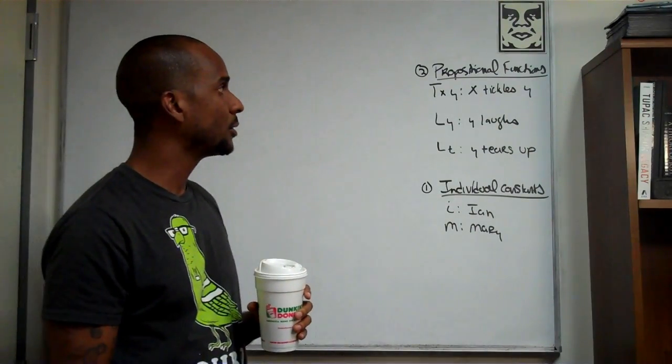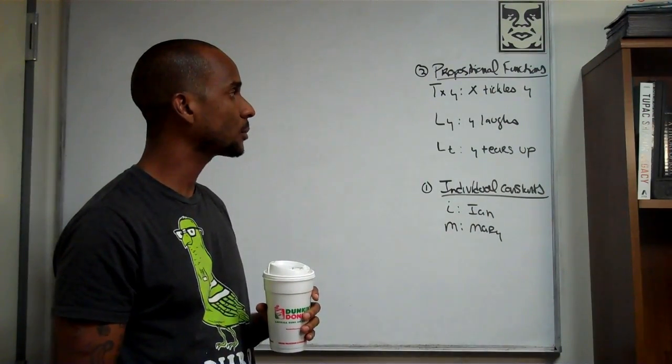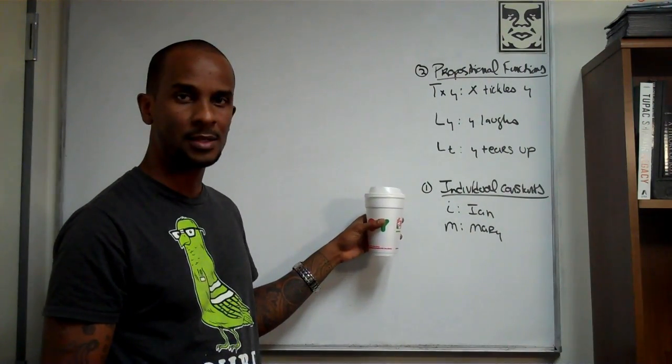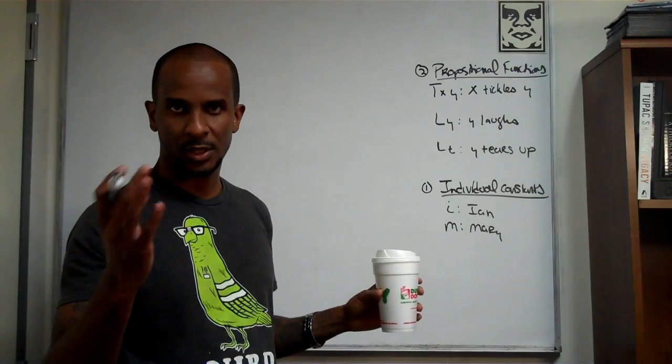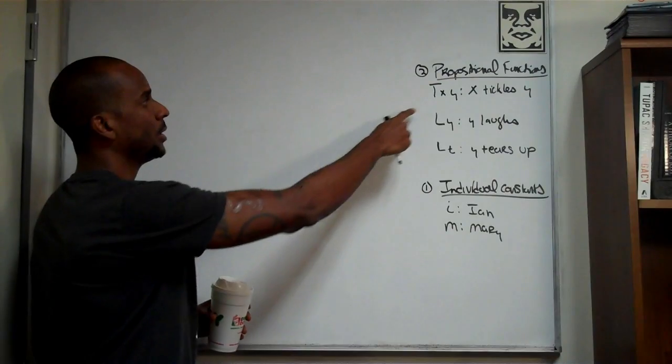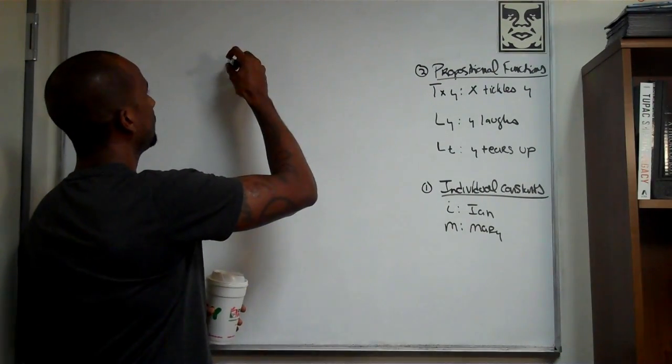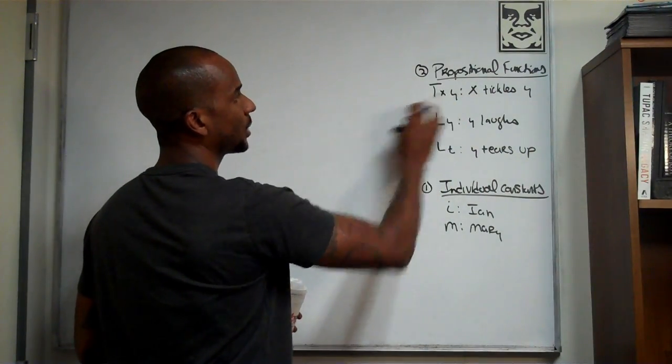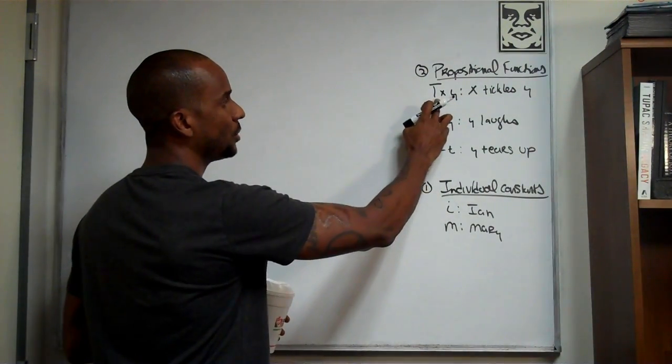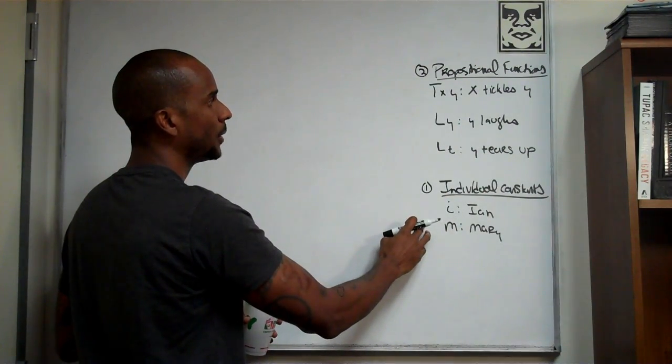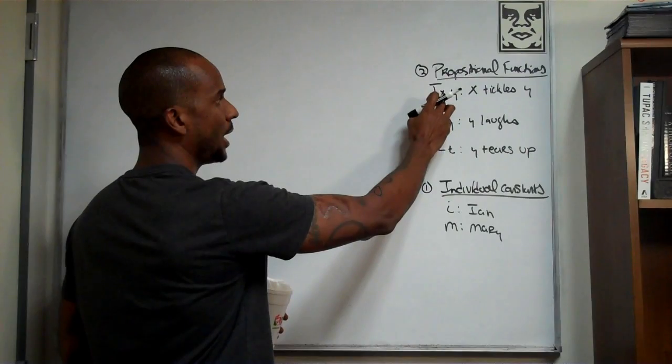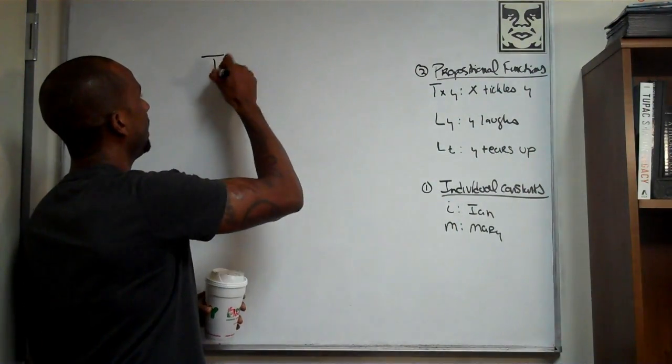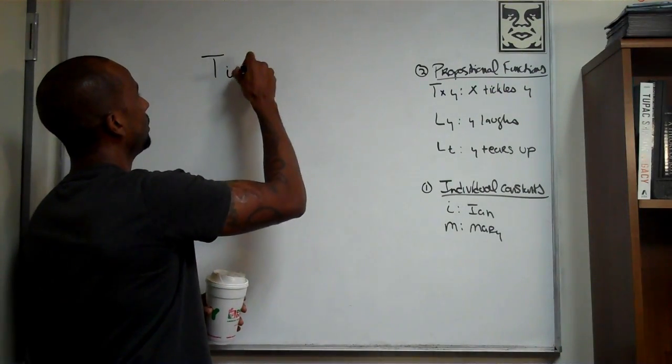I've constructed a really simple relationship between the propositional function and the individual constants. The question is as follows. We know that we can say that in this propositional function, x tickles y, and we know that we can substitute x for either Ian or Mary, it doesn't really matter. So let's see if we say x tickles y, and we'll say Ian tickles Mary, so that we can formalize it as Ian tickles Mary.